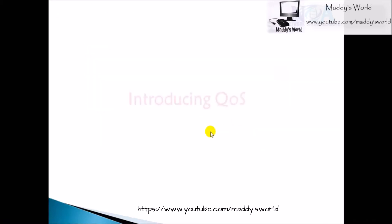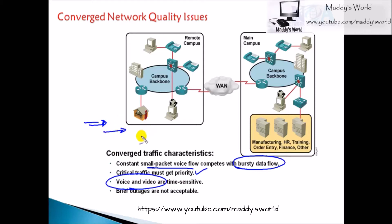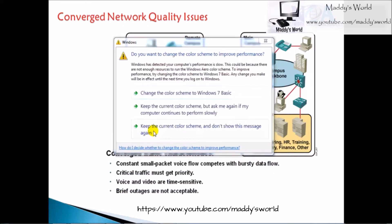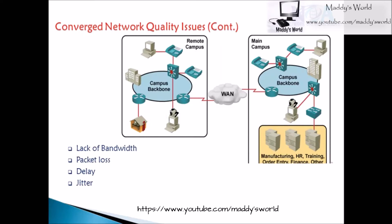Before we go into the detail of different QoS mechanisms for improving network performance, we need to understand the general issues in the network. Small voice packets have to compete with FTP downloads, so we need to ensure that sensitive traffic like voice and video gets high priority, and that critical applications like database servers have no downtime.